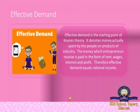The starting point of Keynes' theory is effective demand. The principle of effective demand is the starting point of Keynes' theory of employment and income. Effective demand denotes money actually spent by the people. The money which entrepreneurs receive is paid in the form of rent, wages, interest, and profit. Therefore, effective demand equals national income.